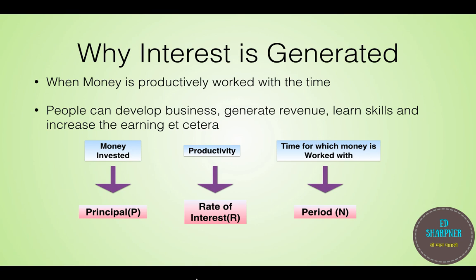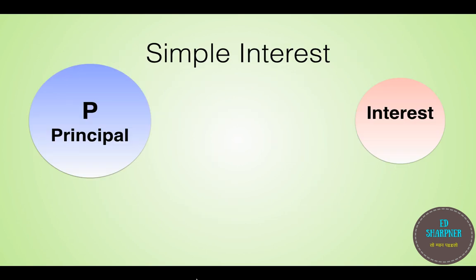Money invested is nothing but the initial principle, loaned or invested. Time signifies the time for which the money is worked with over the period of N, generally in years. And the productivity can be represented by the rate of interest on principle which is given in percentage.